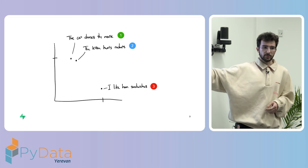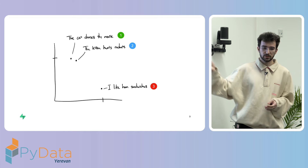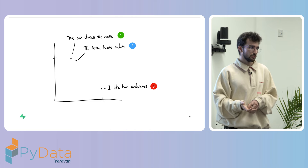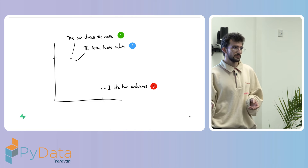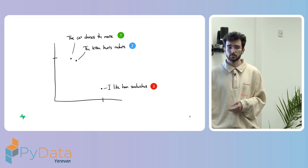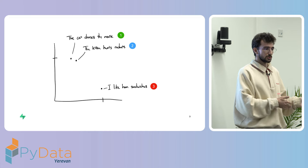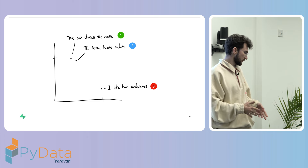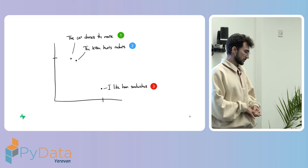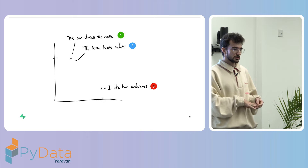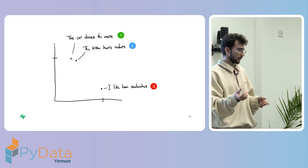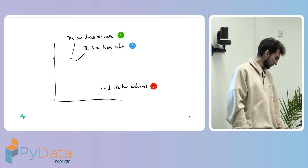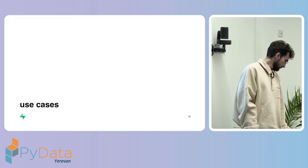This is of course two-dimensional space, and in reality embeddings are much more high-dimensional. For example, the Ada model by OpenAI is 1536 dimensions, and some open source models like GTE small, which is also very good but works only with English, has 384 dimensions. For image searches, models are a bit lower dimension, like around 200, but it's still a lot.